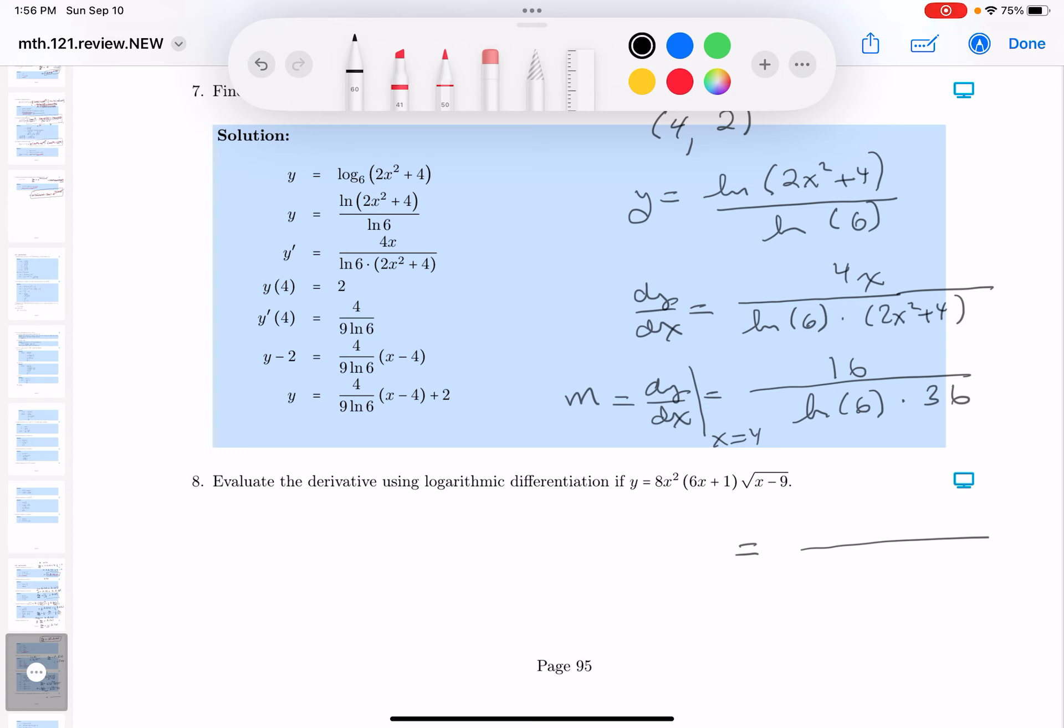And looking at that, I'm going to say by 4. So 4 goes into 16 four times. It goes into 36 nine times. And you have an ln 6 over here. All right? There's not much I can do about that.